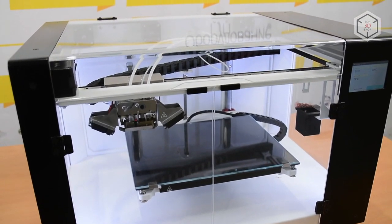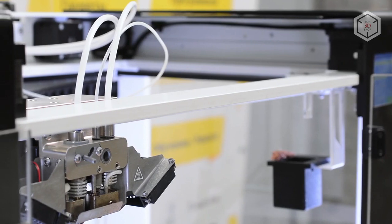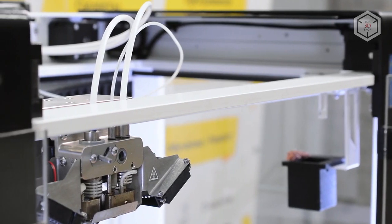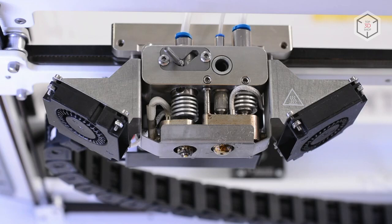Anisoprint Composer A4 is a dual-extrusion 3D printer with an enclosed working chamber and a rigid aluminum frame. The machine can print with both thermoplastic and composite.